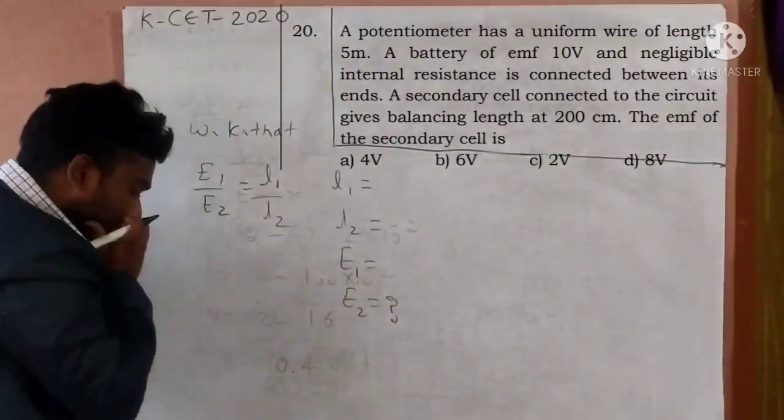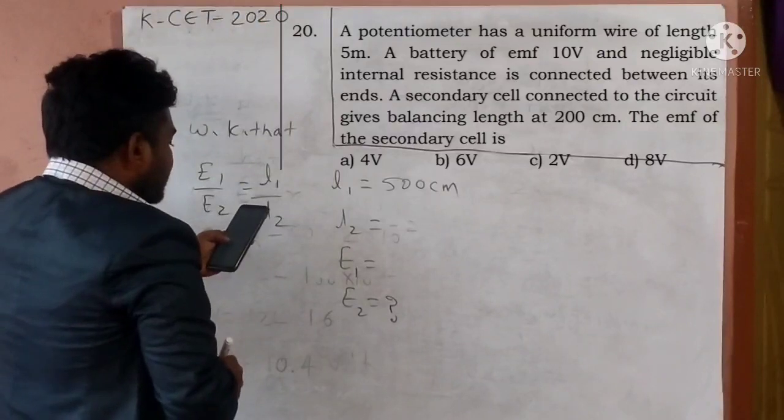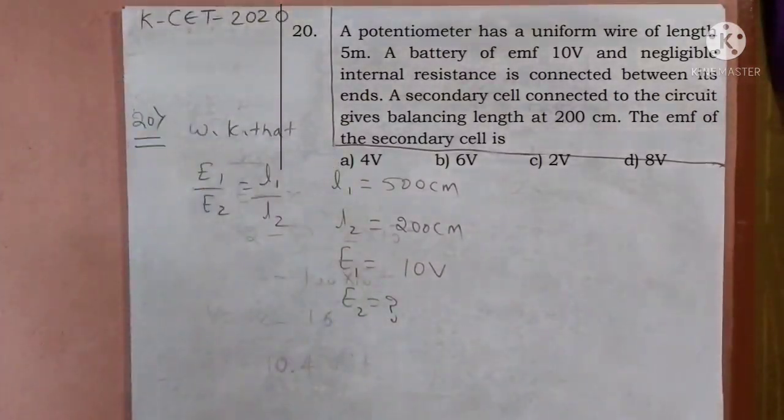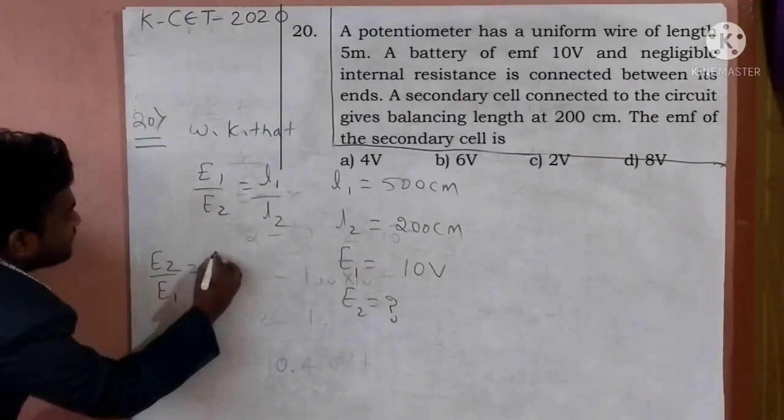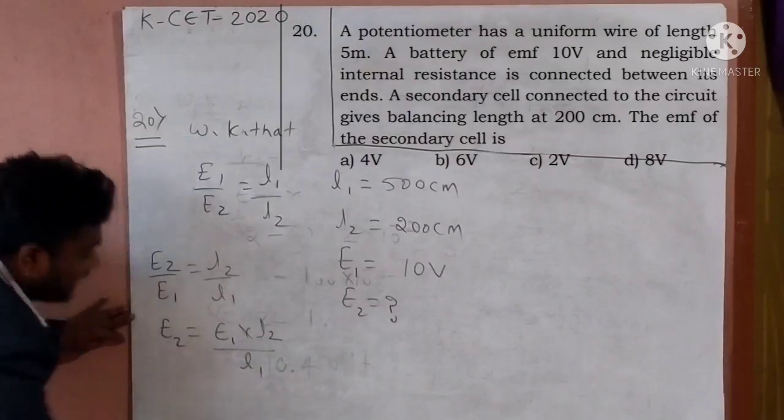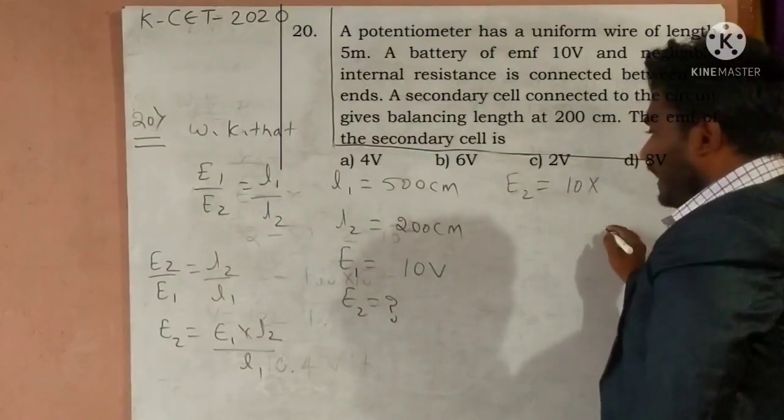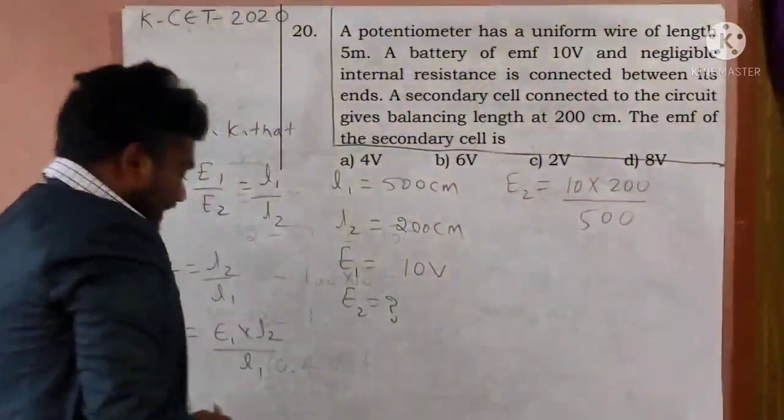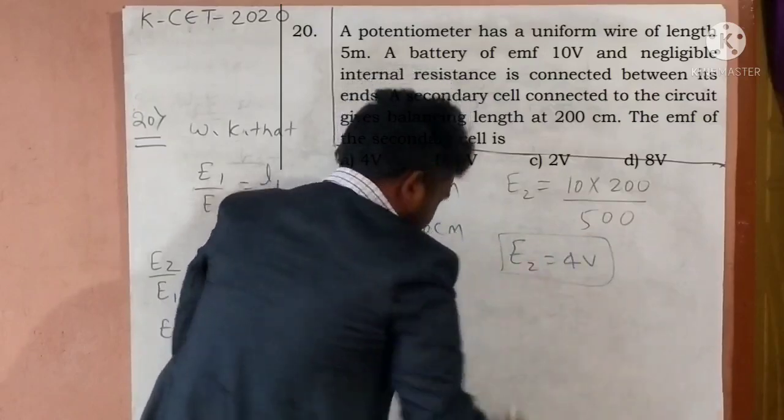So here L1 is given, L2 is given, E1 is given. I should calculate E2 is equal to how much. L1 is 500 centimeter balancing length, L2 is 200 centimeter, E1 is 10 volt. E2 is equal to E1 L2 divided by L1. Substitute: E2 is equal to 10 times 200 divided by 500. In calculation we are going to get answer around 4 volt. 4 volt is the answer. Is it clear?